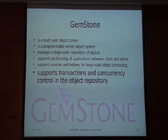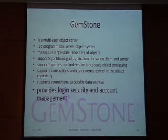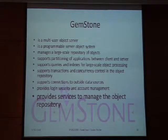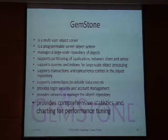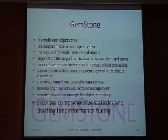GemStone has transactions and concurrency control in the object repository — full database semantics with transaction capabilities. There are connections to outside data sources, login security, and account management, covering things like number of characters in a password and how often you need to change it. Full user capability and security services manage the object repository including backup, restore, and transaction management. Comprehensive statistics and charting for tuning give you performance analysis capabilities in the server environment.